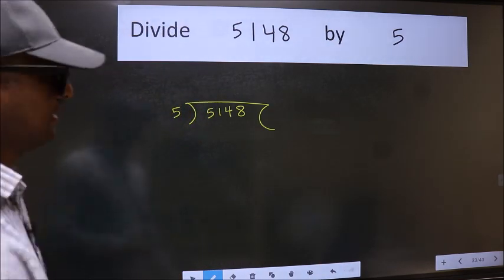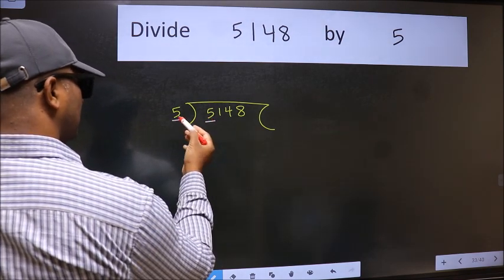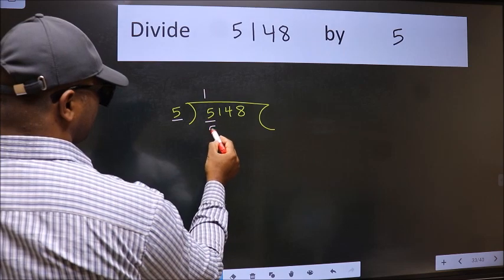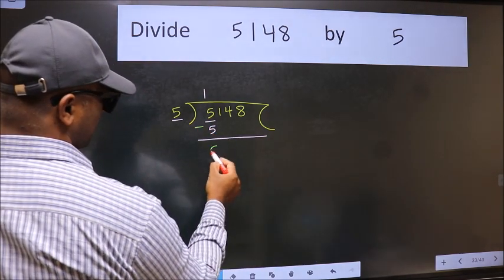Next. Here we have 5 and here 5. When do we get 5 in the 5 table? 5 ones 5. Now we should subtract. We get 0.